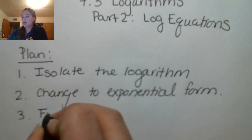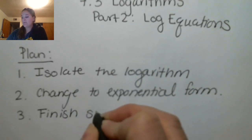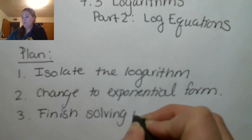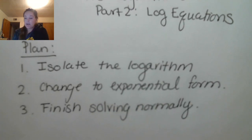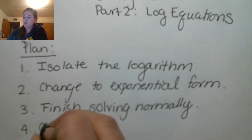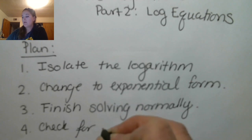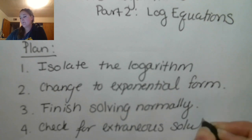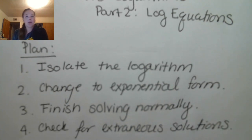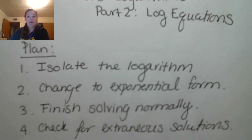And then the last thing we're going to do is finish solving normally. We are actually in these types of equations going to check for extraneous solutions. We remember extraneous solutions from when we talked about square root equations — they're solutions that come up naturally from solving the equation, but they are not actually solutions. They're fake solutions.